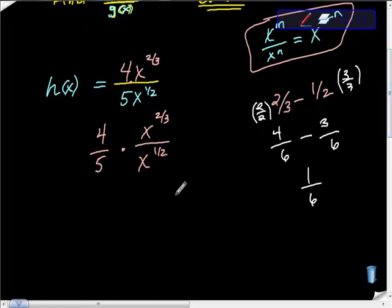So look at this for a second. Now we have, we're going to keep our 4 5ths. So here's our 4 5ths that we started with. Don't freak out about this. This is what happened. I simplified this. I used this rule. And I did 2 3rds minus 1 half is equal to 1 6th. So we have x to the 1 6th power.